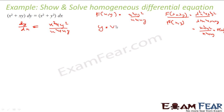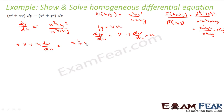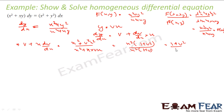To solve this, we put y equal to vx, so dy/dx equals v plus x·dv/dx. Substituting, v plus x·dv/dx equals (x² + v²x²) divided by (x² + x·vx). Factoring x² from numerator and denominator, we get x²(1 + v²) over x²(1 + v), which simplifies to (1 + v²)/(1 + v). Therefore x·dv/dx equals (1 + v²)/(1 + v) minus v.